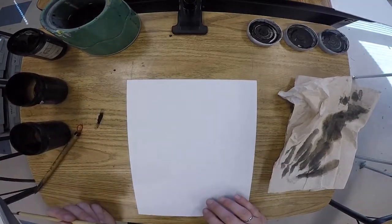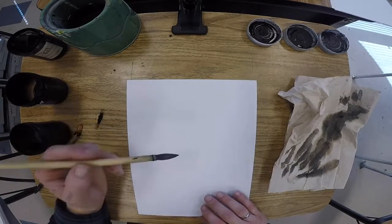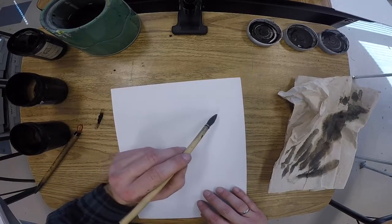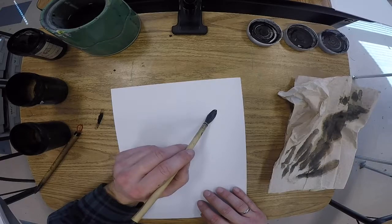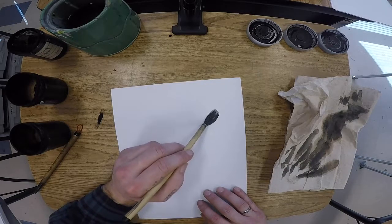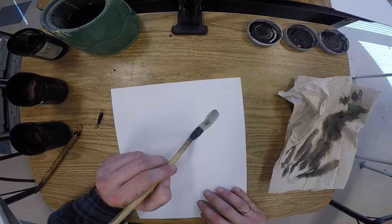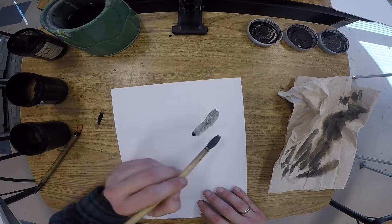To make a dragonfly, we start by pressing our brush down all the way flat and then we pull. We lift the brush as we pull, just like making a bamboo leaf.